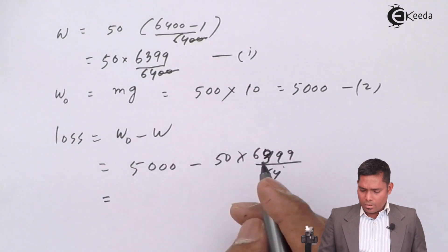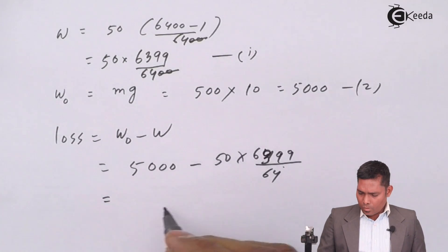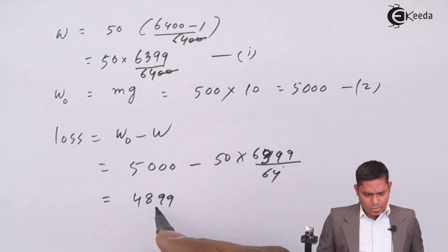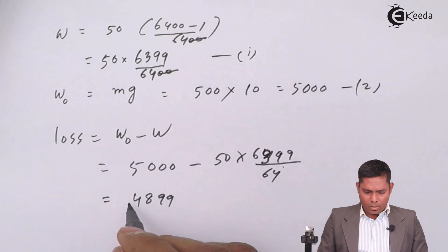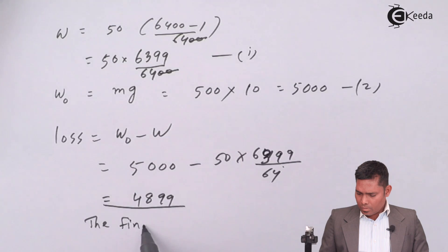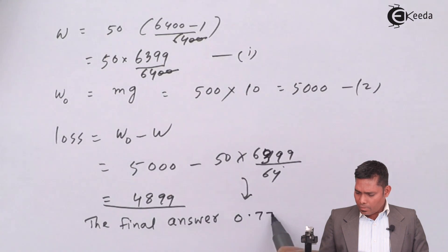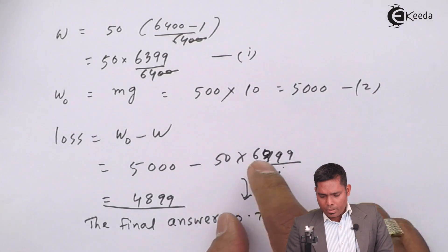If I use the calculator, then the loss comes out to be, I just use the calculator. 4899 is the decrease in weight. The decrease in weight is finally 0.77 Newton. The final answer, if I solve this, 0.77 Newton, this is the decrease in weight.